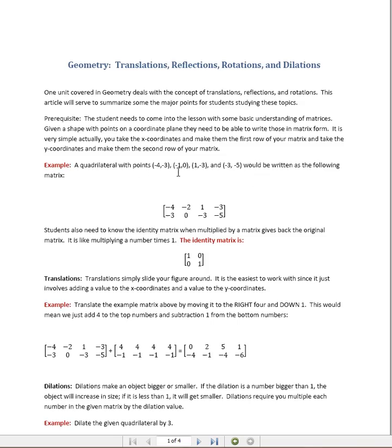The first value in each of the pairs is the x values, so those are the values that get written on top of the matrix on the first row. The second row becomes the y values: 3, 0, -3, and -5.